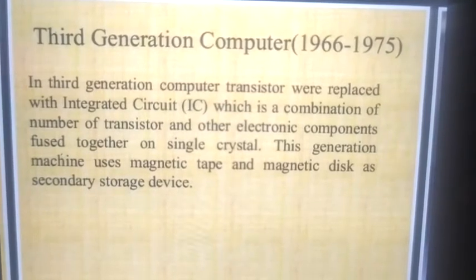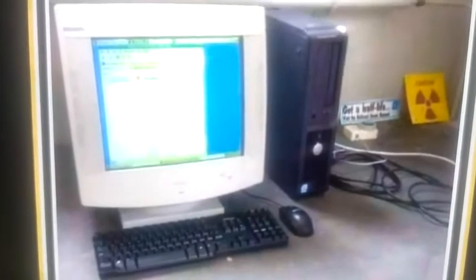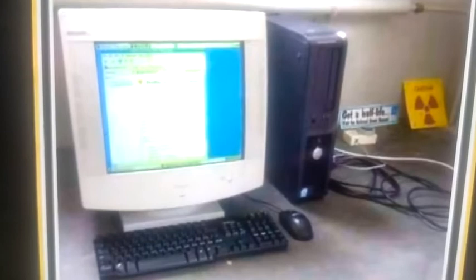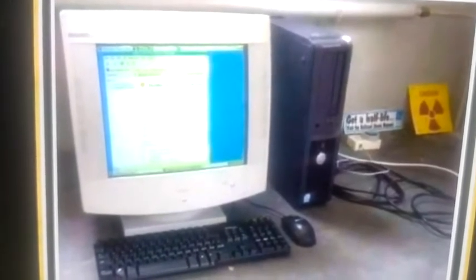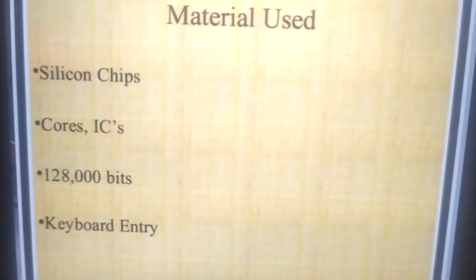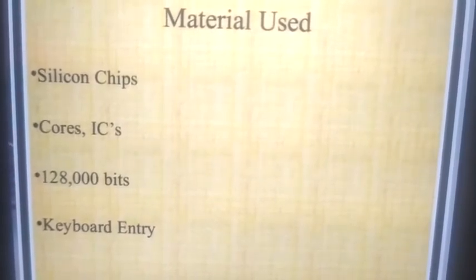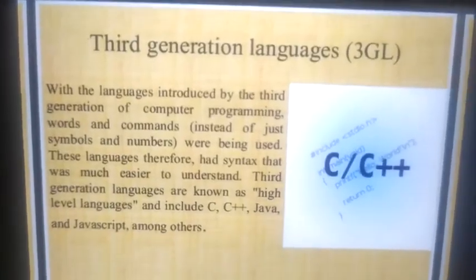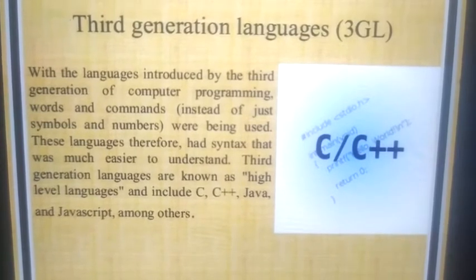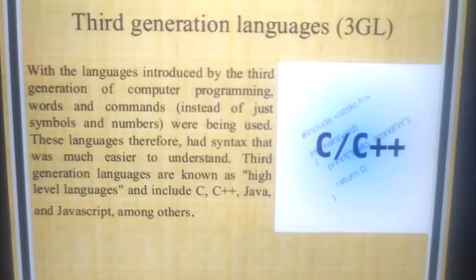The third generation computer is better than the second generation. Here you can see the picture — this is the type of computer you may have known or used, and this is the third generation computer. The materials used in the third generation are silicon chips, IC integrated circuits, 128,000 bits, and keyboard entry — in this generation the keyboard is used for data entry. The languages used in the third generation include C, C++, Java, and JavaScript.